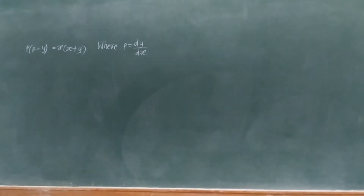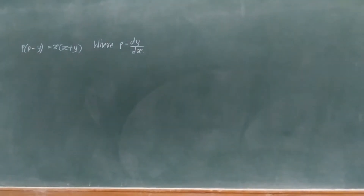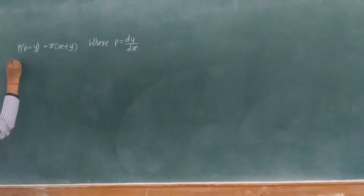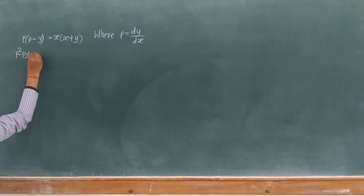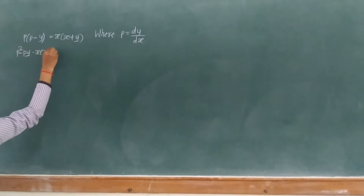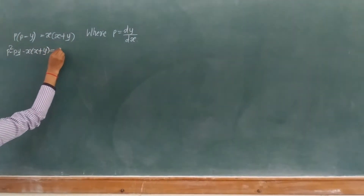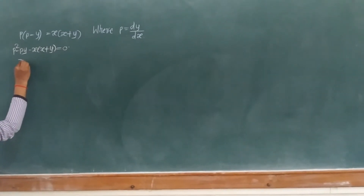We are solving an example of a differential equation of first order and higher degree. Our example is p into (p minus y) equals x into (x plus y), where p equals dy/dx. We rearrange this as p squared minus py minus x(x plus y) equals 0, which is quadratic in p.